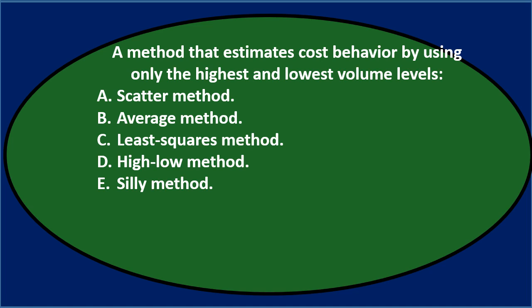First question: a method that estimates cost behavior by using only the highest and lowest volume levels. A. Scatter method. B. Average method. C. Least squares method. D. High-low method. E. Silly method.